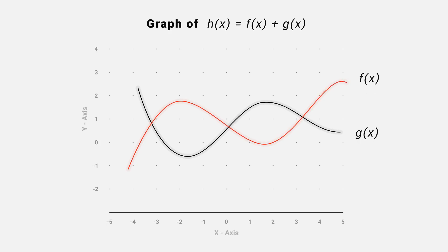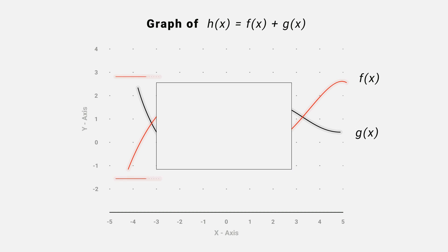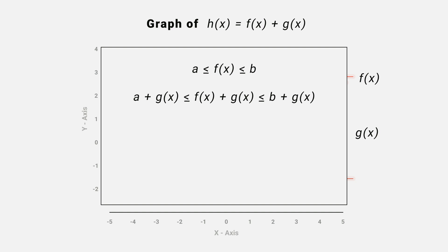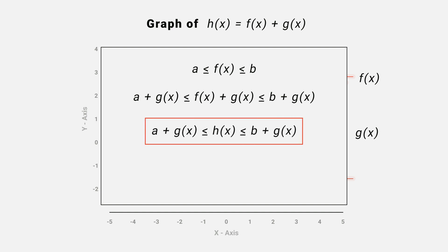For this, we have to find the maximum and minimum value of f. Let's say f lies between a and b. Now when we add g, we get a plus g is less than f plus g is less than b plus g. And here f plus g is equal to h.